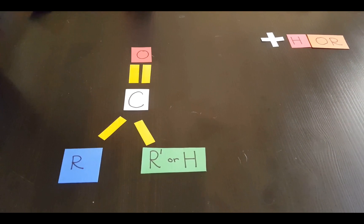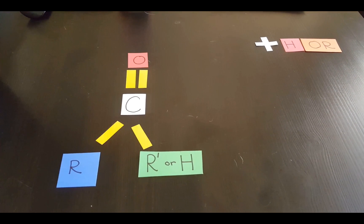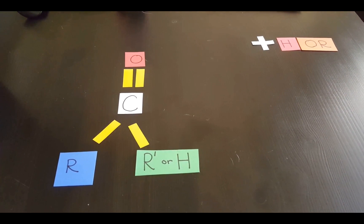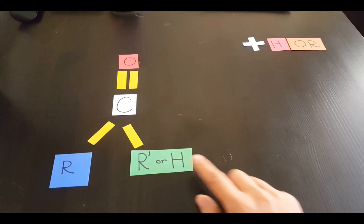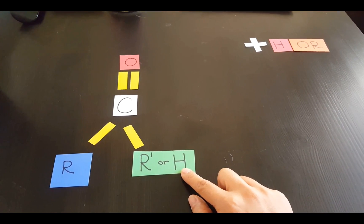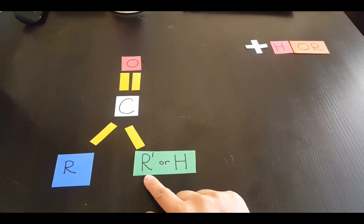This image here represents the basic form of a carbonyl compound, an aldehyde or a ketone. This would be an aldehyde if this right here was a hydrogen or a ketone if it was an R group.